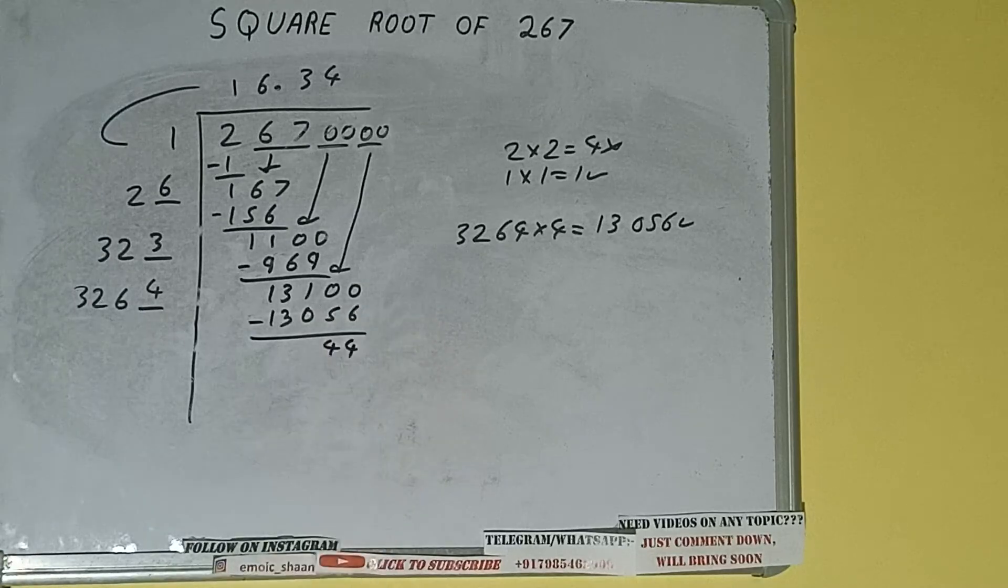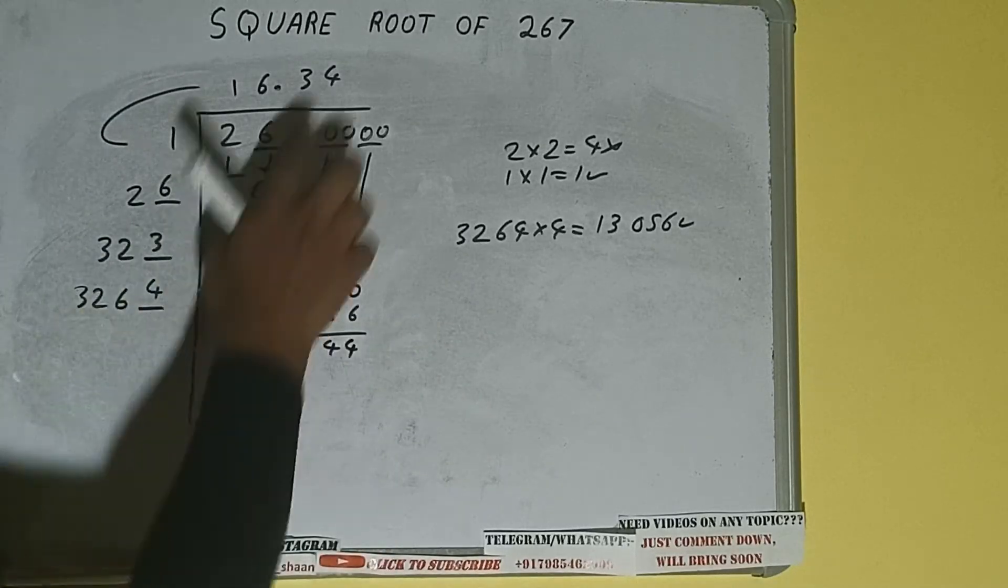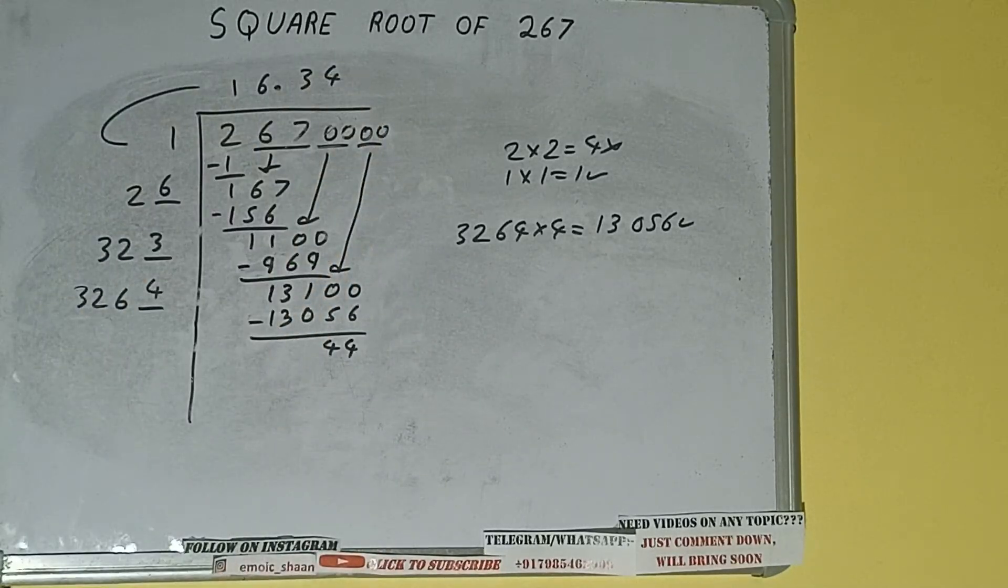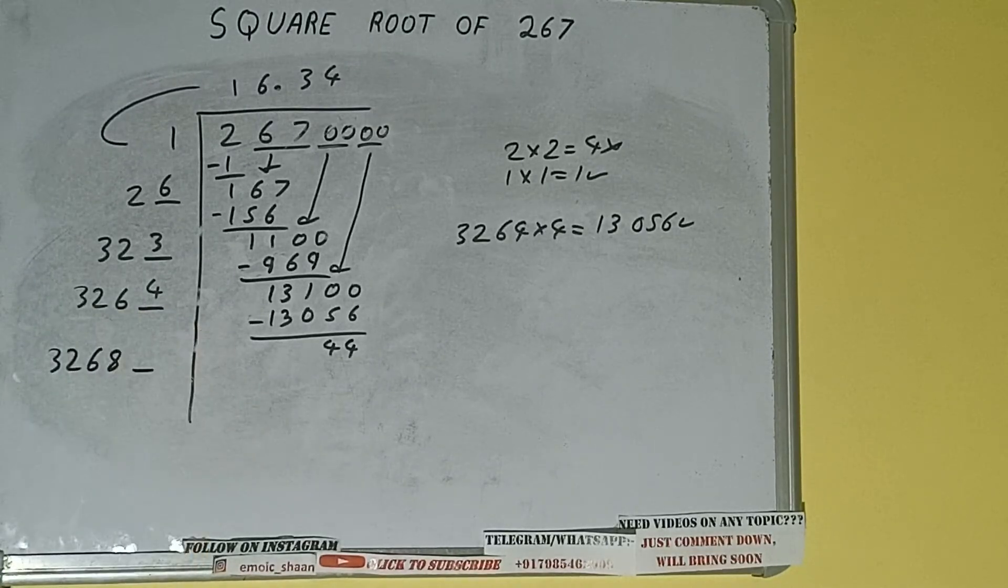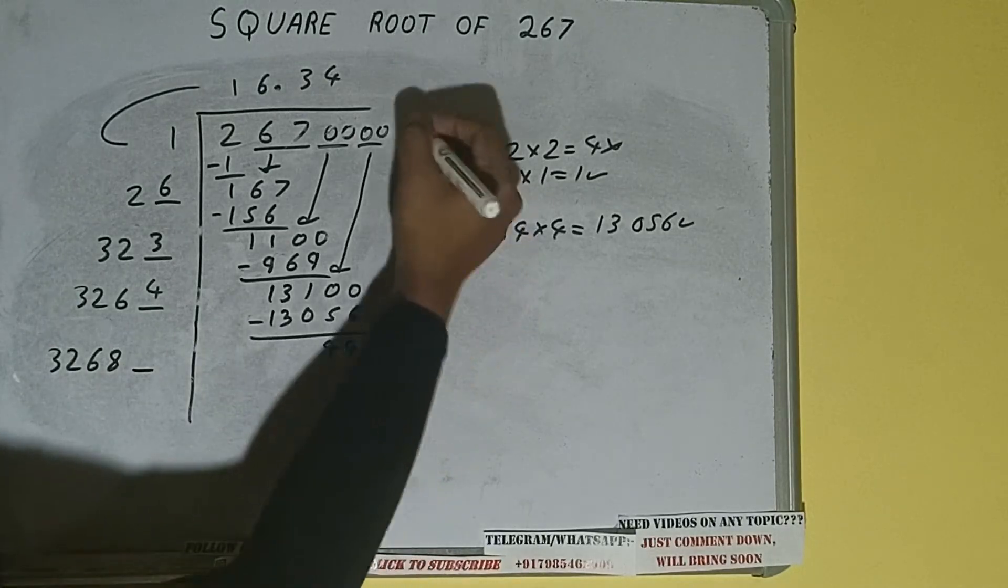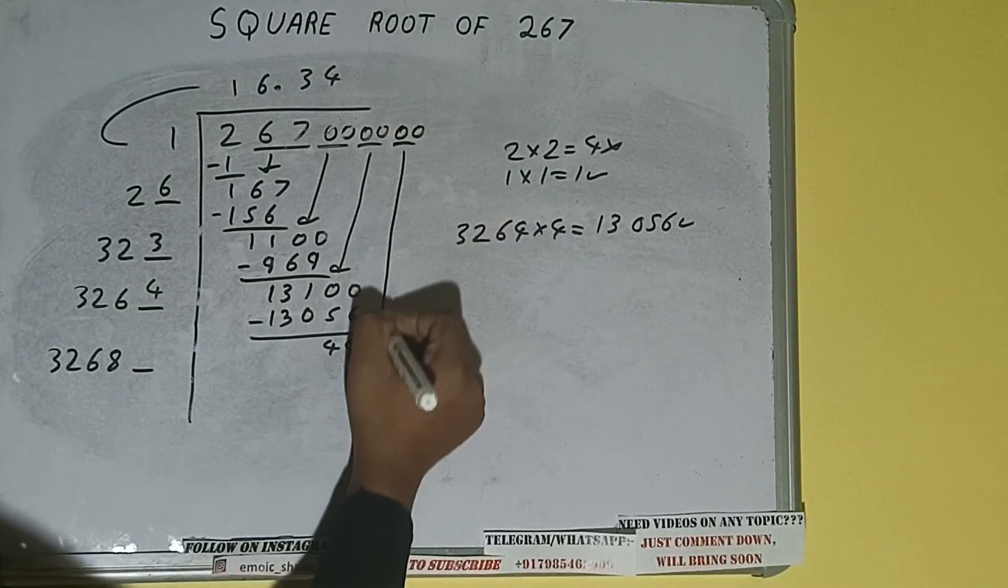Now 3264 into 4 we did, so add both. 3264 plus 4 will be 3268 and one digit extra. This number we need to make big, so bring the next pair of zeros down and it will be 4400.